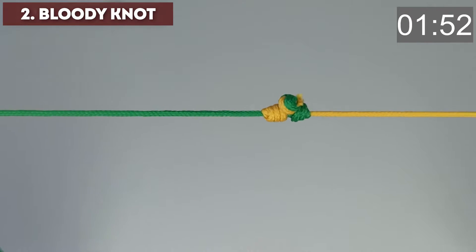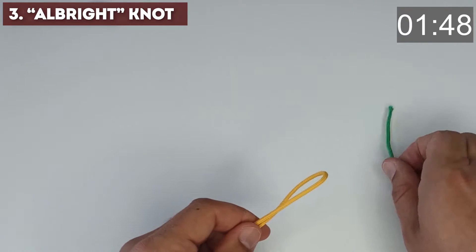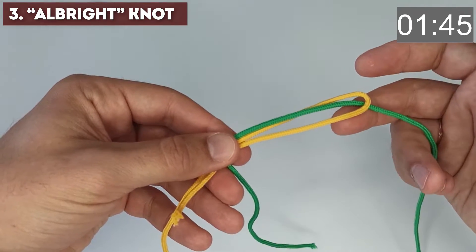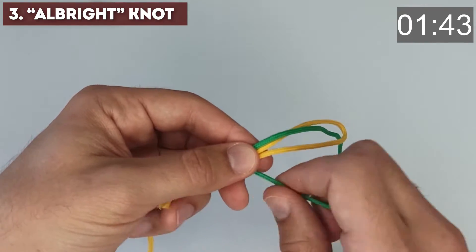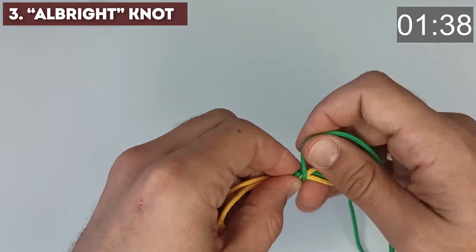Cut off the temporary knot. Albright knot. Make a loop from the fishing line and pass it through the cord, leaving the end about 15 cm. Wrap both loops with the braid, holding the loops with your fingers.